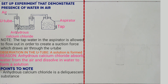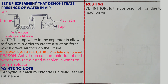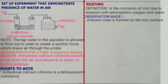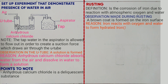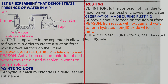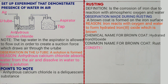Our next topic is rusting. In this topic we need to know: what is rusting, conditions necessary for rusting to occur, factors that accelerate rusting, and how to prevent rusting. Rusting is the corrosion of iron due to reaction with atmospheric oxygen and water. The observation during rusting is a brown coat formed on the iron surface. The reason is iron reacts with oxygen and water to form hydrated iron(III) oxide. The condition necessary for rusting is oxygen and water.